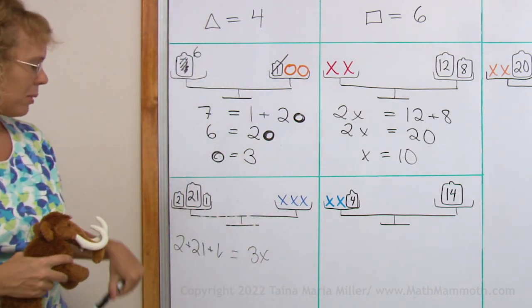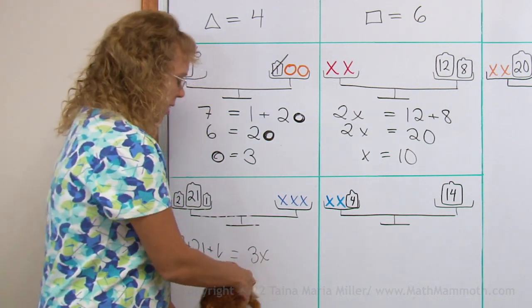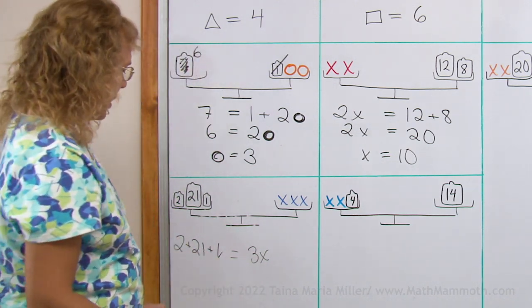Yes. 2 plus 21 plus 1 equals 3x. 3 times x, so x plus x plus x.